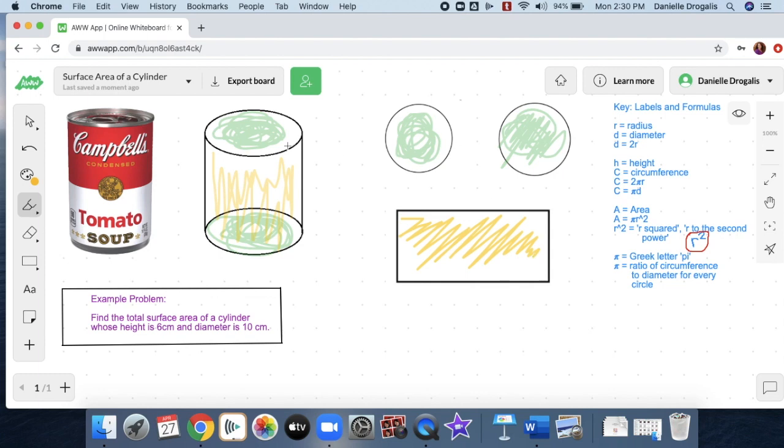And within here, maybe I'll go in yellow, the sides of the cylinder are represented here in this rectangle. So if you were to cut the cylinder straight down and then open it up flat, this is the shape that you would create.